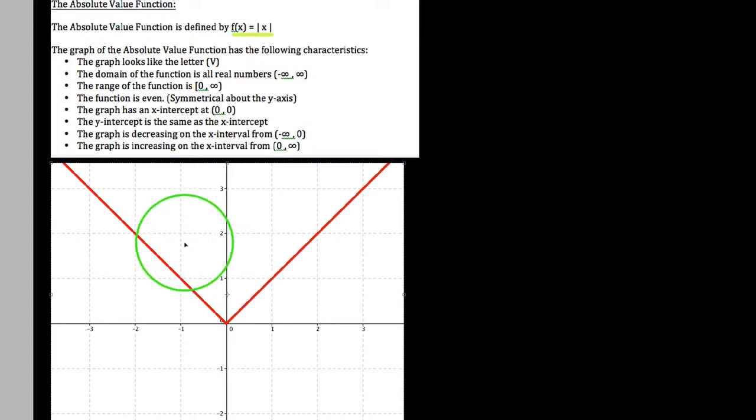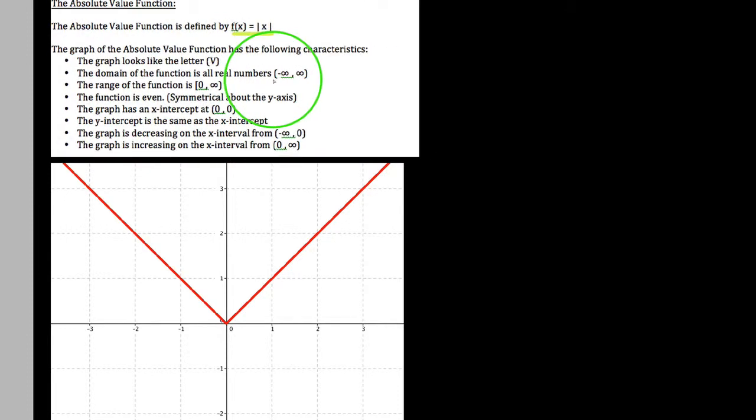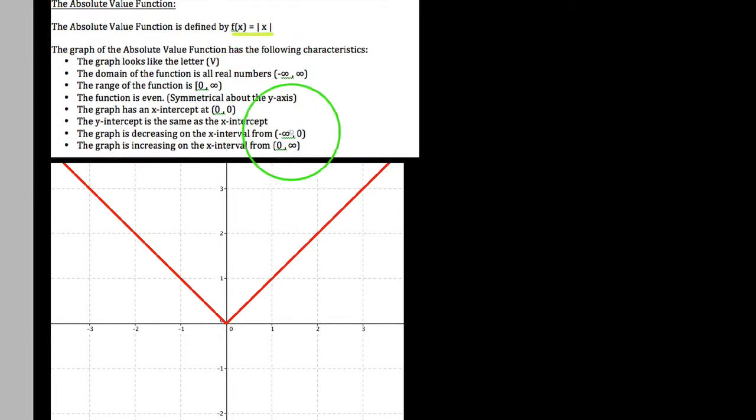In terms of domain, think about this, in terms of x values, could I ever plug in an x value that I would never get back a y value? The simple fact is the domain of this graph is all real numbers. There are no x values for which my graph does not exist, so from negative infinity out to positive infinity, this graph ought to exist.